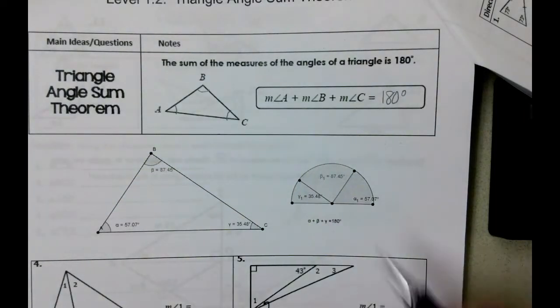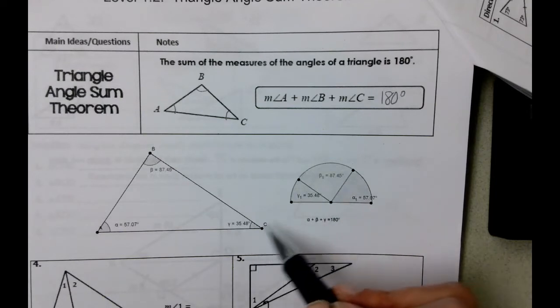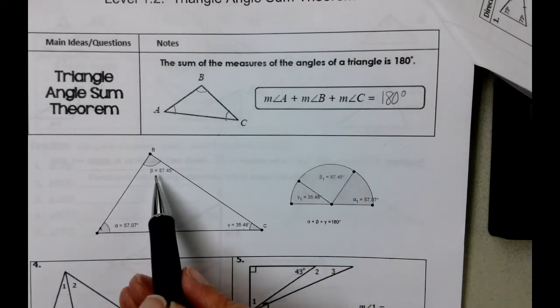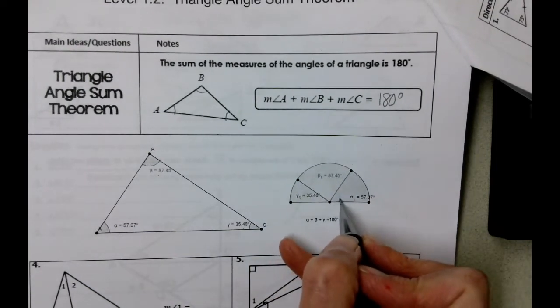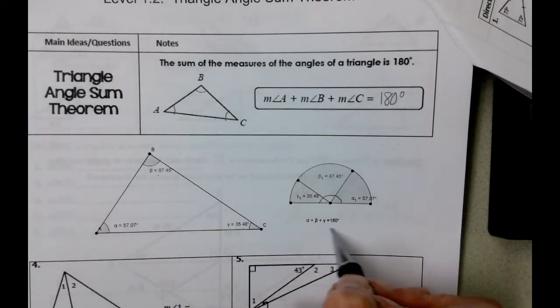Here's another picture, if you're familiar with the protractor. Here, we took the measure of this angle, the 35.48, plus the measure of this angle, the 87.45, plus the measure of this angle, 57.07, and it forms this straight line here. And again, that's why we add to 180 when we're working with triangles.